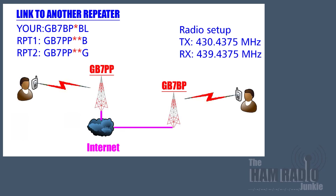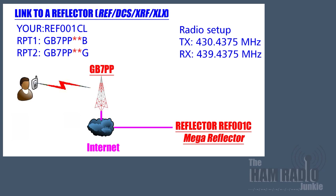RPT1 and RPT2 are unchanged. If you wish to connect not to a repeater but to the internet and a series of reflectors — which are like huge rooms connecting lots of different servers — then rather than the callsign of the repeater you're trying to access, you would put the reflector callsign, its port letter, and then the letter L. In this example, the user is connecting to a reflector which is REF001C. This is entered into the Your section with the letter L indicating linking.